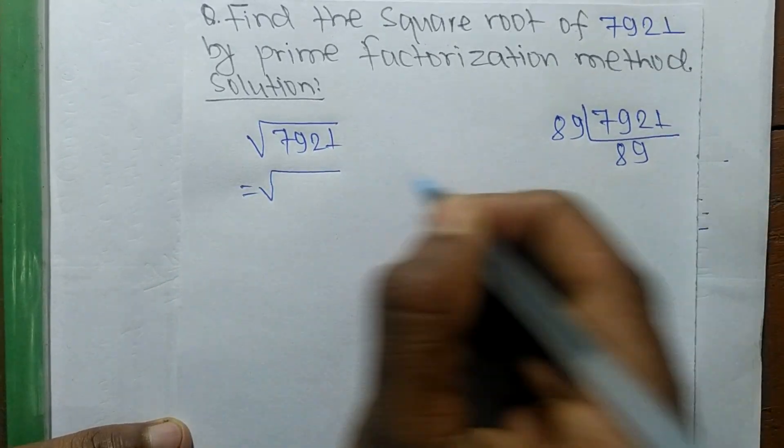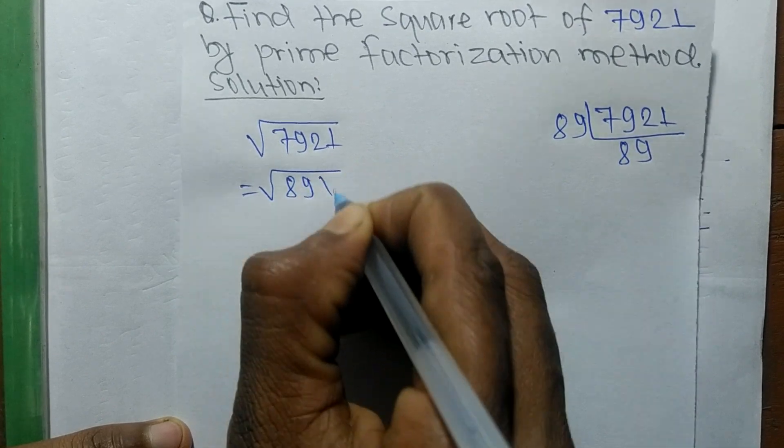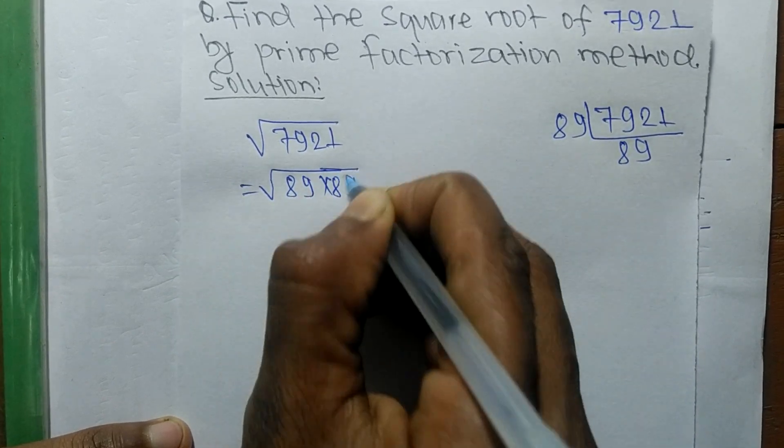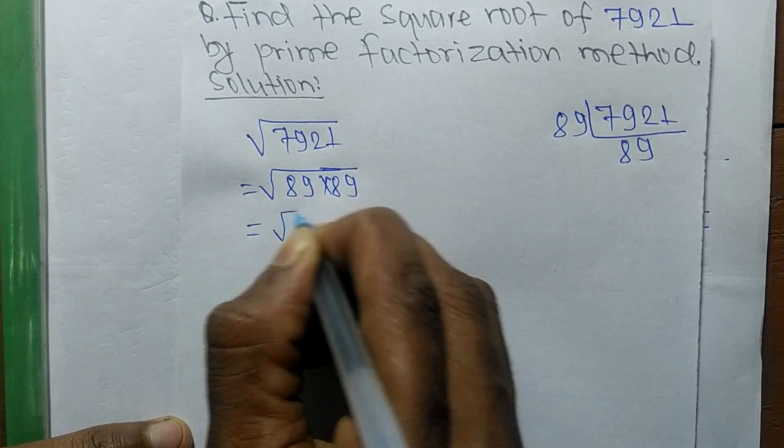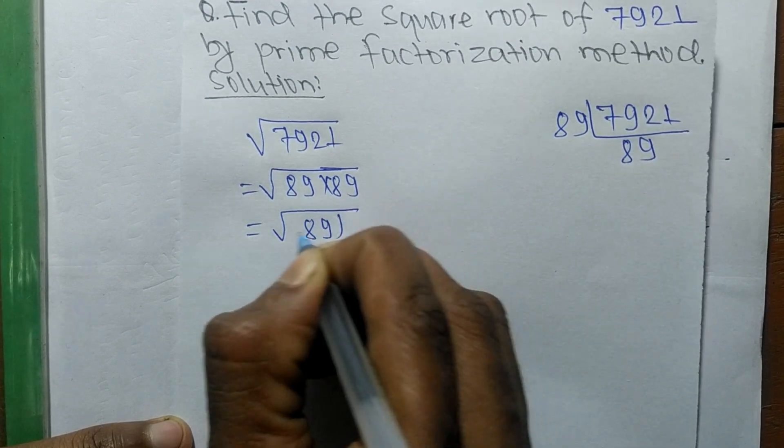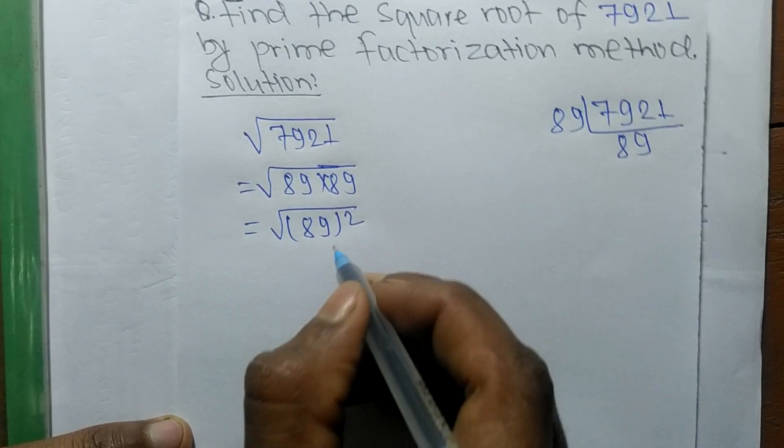From the prime factor, we can write 89 times 89, so it is equal to 89 whole square.